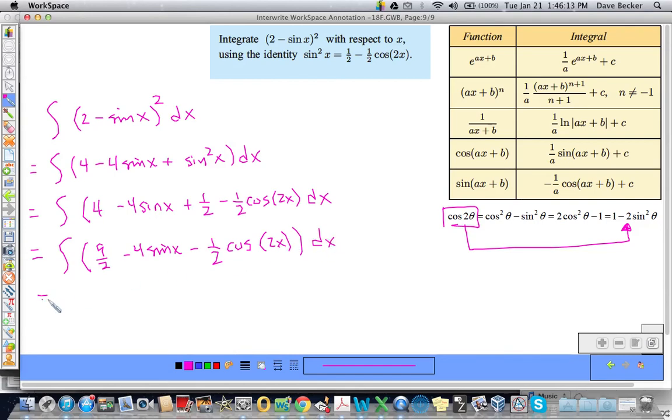And then I just integrate like there's no tomorrow. So this would be 9 halves X. Integral of sine is negative cosine. So that's going to be plus 4 cosine X. Okay? Now we're in the form of cosine AX plus B where my B is zero. And that's just 1 over A times the sine of AX plus B.